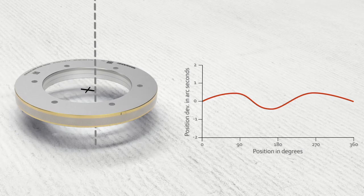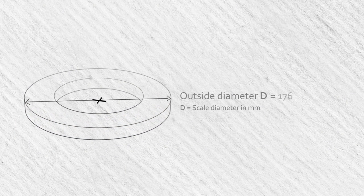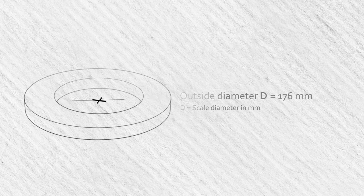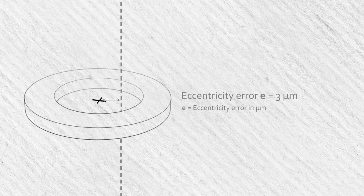Why is this? Let's take an example. We have a scale drum with an outside diameter D of 176 millimeters and a measured eccentricity E of 3 micrometers, or 3 thousandths of a millimeter.